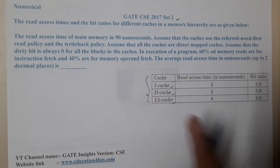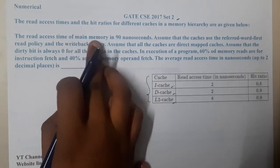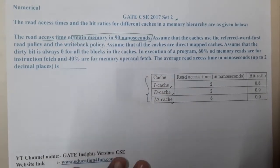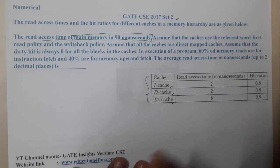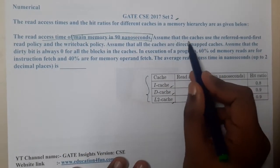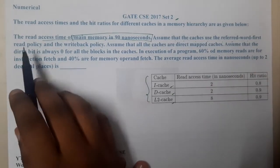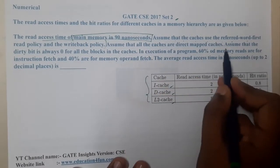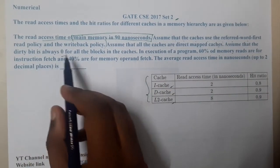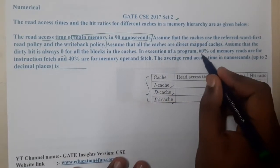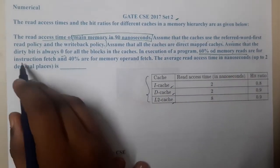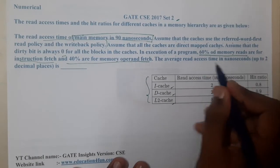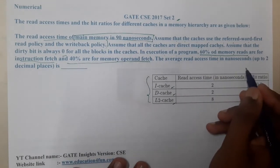The read access time of main memory is 90 nanoseconds — if the data is not found anywhere, it will take 90 nanoseconds to read. The cache uses referred-word-first read policy and write-back policy. All caches are directly mapped, the dirty bit is always zero, and 60 percent of memory reads are instruction fetches while 40 percent are memory operand fetches.